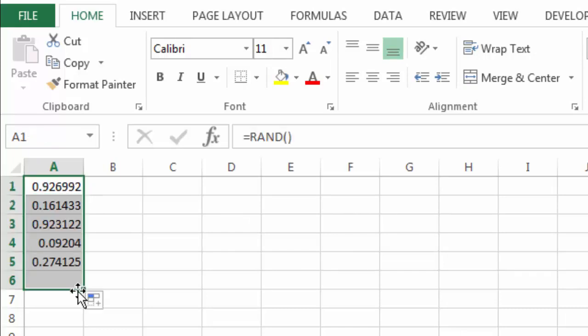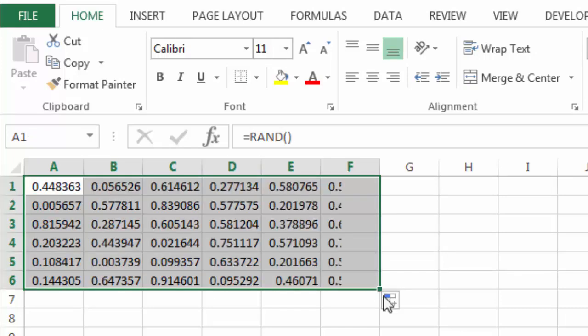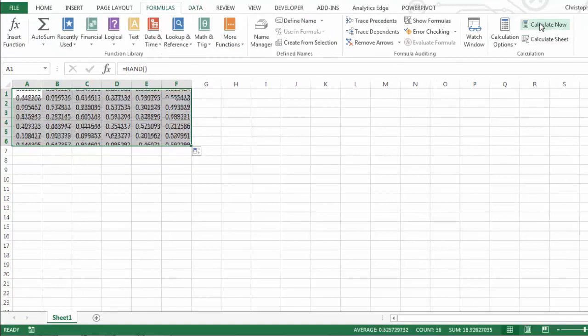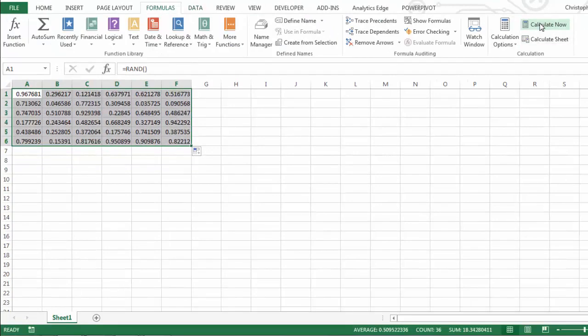As you'll see, I'll drag this out, drag it over, and it's just giving me a series of random numbers between 0 and 1. And if I go to the Formulas tab, click Calculate Now, you'll see they consistently change.